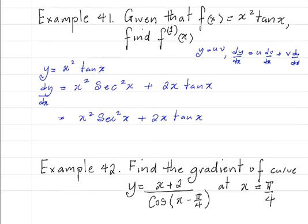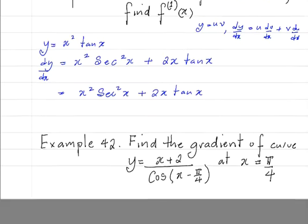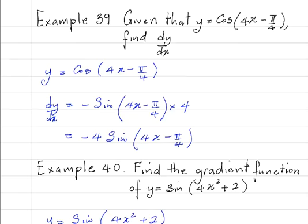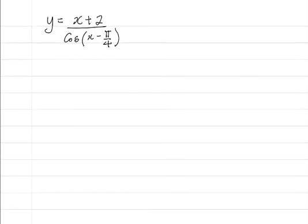Example 2: Find the gradient of the curve y is equal to (x plus 2) over cosine(x minus π/4) at x is equal to π/4. So this is a quotient — you're dividing one function by another function.